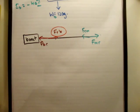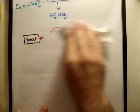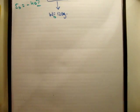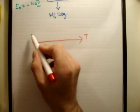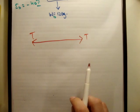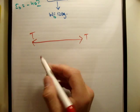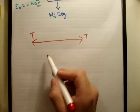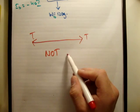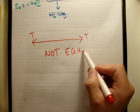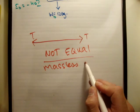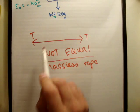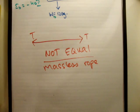What you will see is that people will draw, and your teacher will do it, they'll draw the rope with T and T saying that implies that these are Newton's third law action-reaction pairs and that they're equal. But they're not equal, not necessarily equal. They are only equal when there is a massless rope.